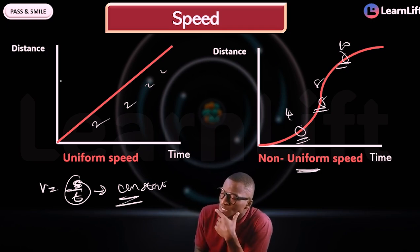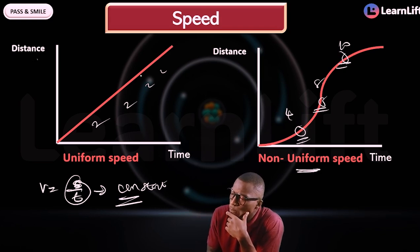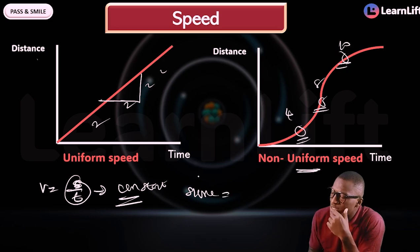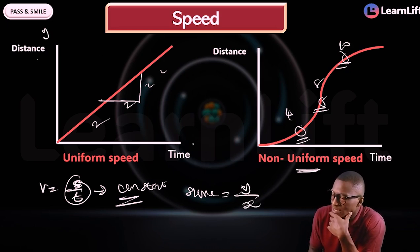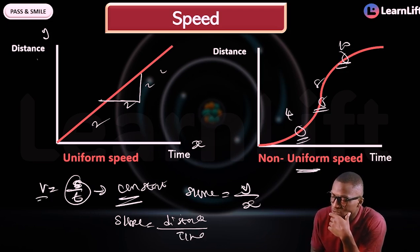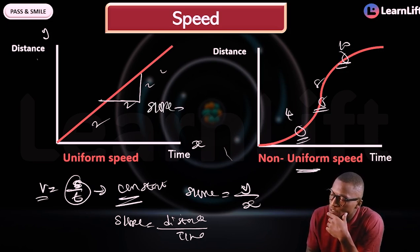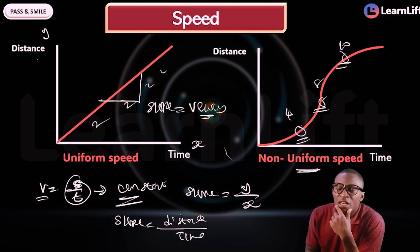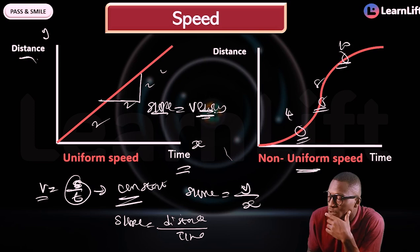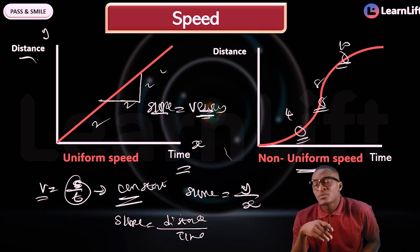On a distance-time graph, the formula for slope is: slope = Δy / Δx = (y2 − y1) / (x2 − x1). Since the y-axis is distance and the x-axis is time, distance divided by time gives velocity. Therefore, the slope of a distance-time graph equals velocity or speed.